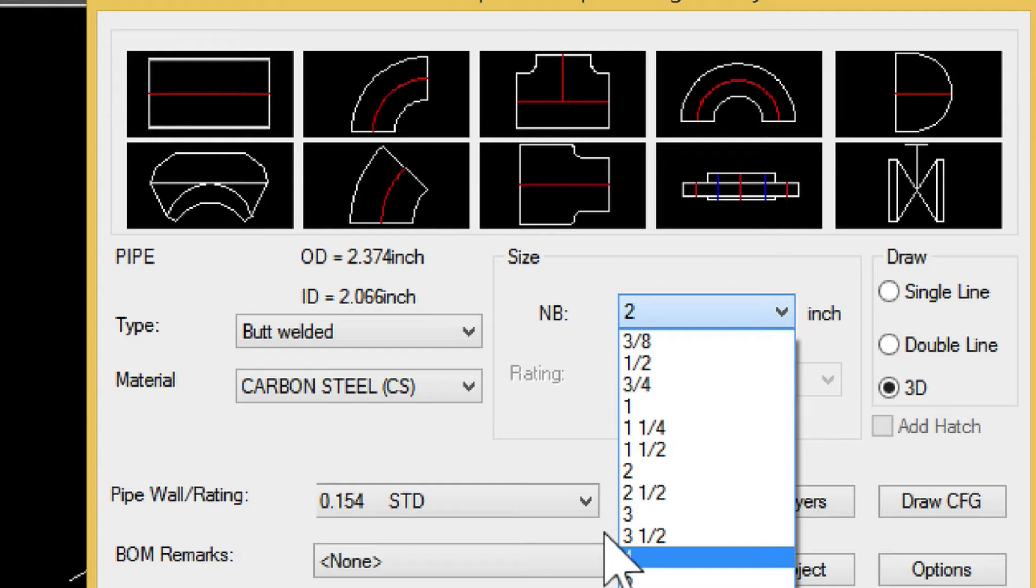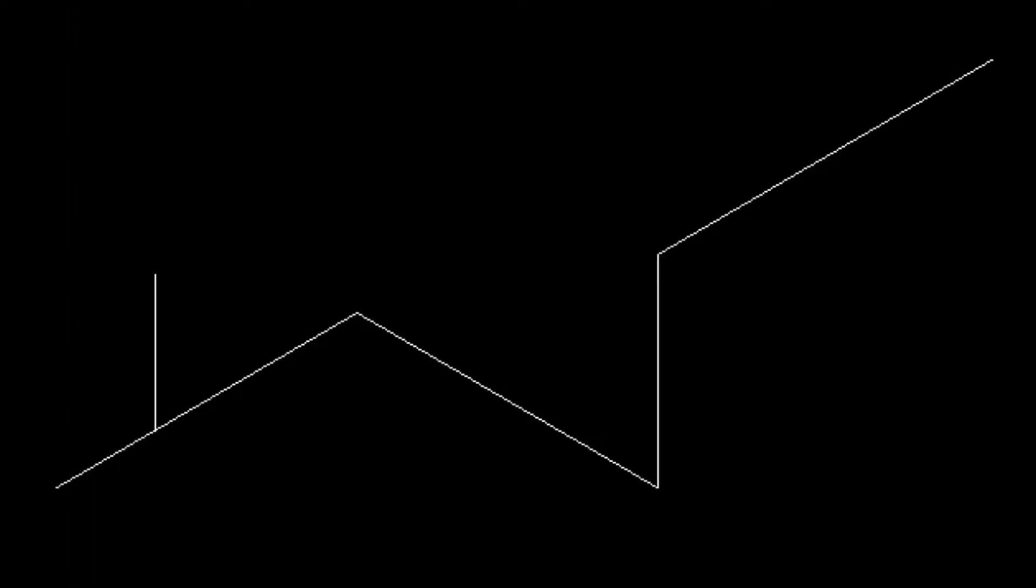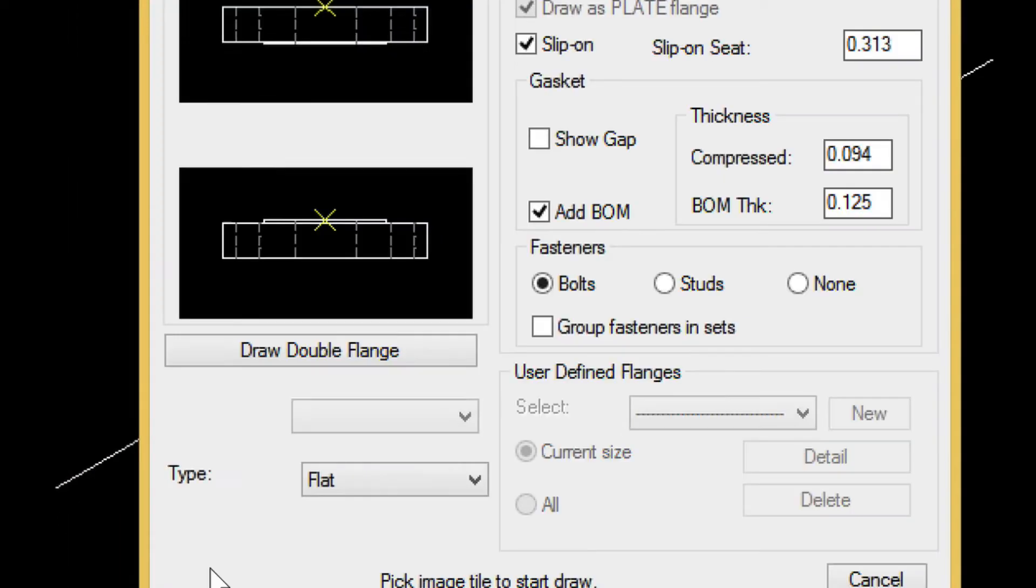But today, we're using a 4 inch butt welded fitting. We'll choose the double flange fitting. And when prompted, we'll say yes to both gasket and fastener holes. Then, we'll choose a point in the upstream direction.